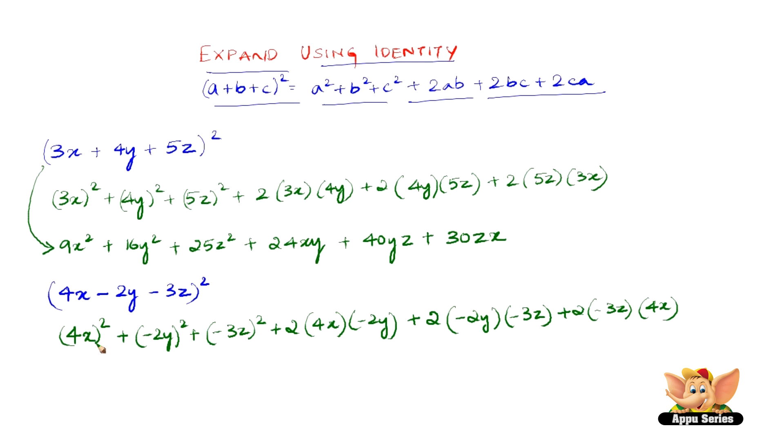We just have to do simple expansions. 4x the whole square is 16x square, minus 2y the whole square is 4y square, minus 3z the whole square is 9z square, 2 into 4 is 8, 8 into minus 2 is minus 16, x into y is xy. And here again we have plus 2 into minus 2 as minus 4y, minus 4y into minus 3z is plus 12yz. And the last expansion is plus 2 into minus 3z is minus 6z and minus 6z into 4x is minus 24zx. So therefore 16x square plus 4y square plus 9z square minus 16xy plus 12yz minus 24zx is the expansion of 4x minus 2y minus 3z the whole square.